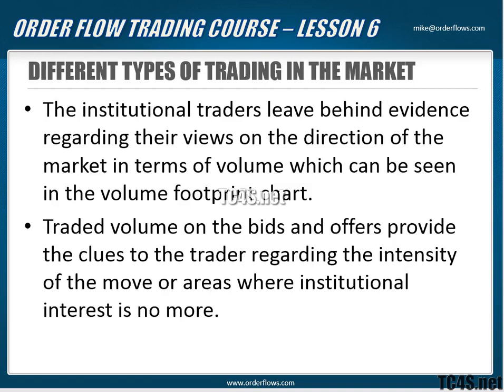Once an institutional trader starts to get into the market, they're going to leave behind evidence of their view of the direction of the market. You can see their volume at the trade — you can see it in the volume footprint chart. They can't hide their trades once they're executed. They could try to hide the trade as it's happening — they won't show 500 lots when they've got 3,000 to buy; they'll show 25 at a time. But the order will keep refreshing and it'll show up in the volume.